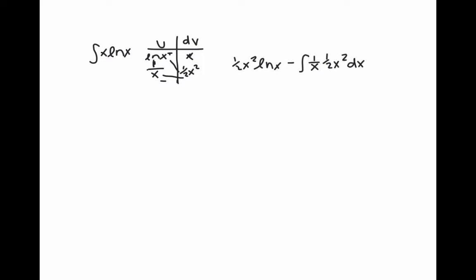When the final term in the u column does not go to zero, the last multiplication across will be in an integral. And that's the table method.